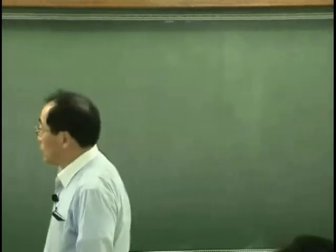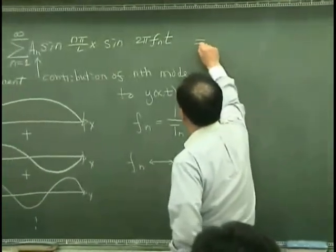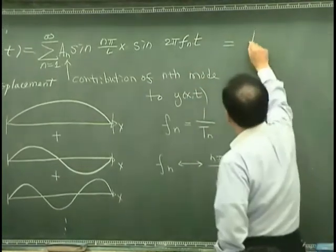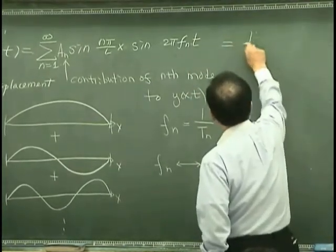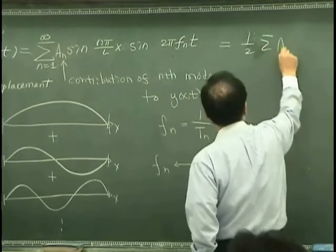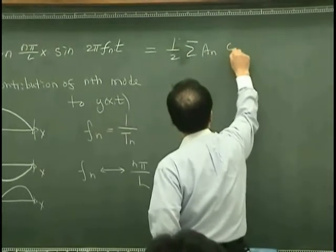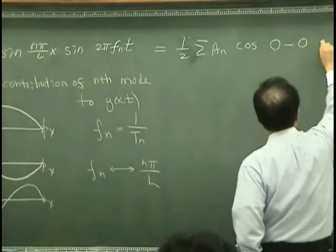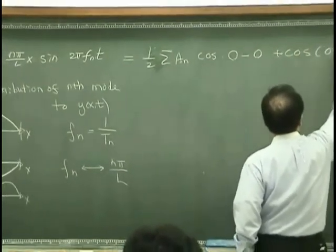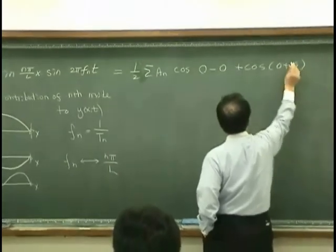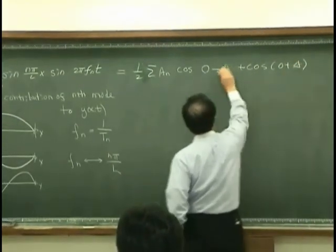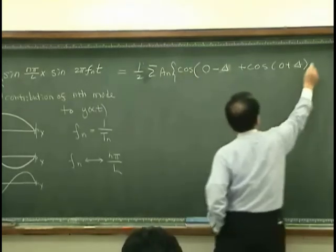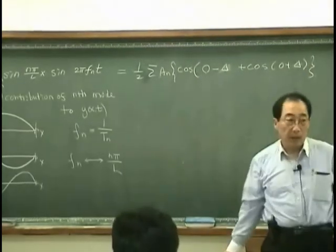And also in the last lecture, we found that this can be expressed as one-half summation An, but has the cosine something minus something plus cosine something plus something.